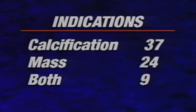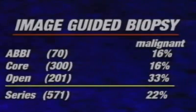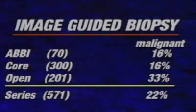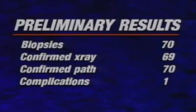For our first 70 patients, the indication for biopsy included calcification in 37 cases, a mass in 24 cases, and both calcification and mass in 9. The pathology was benign in 59 patients and malignant in 11, for a positive predictive value of 16% in our early series. During a one-year experience with image-guided biopsy, the positive predictive value was 16% for ABBI biopsies, 16% for core biopsies, and 33% for open procedures. The overall yield was 22%. In our first 70 cases, the specimen x-ray clearly confirmed the presence of the lesion in 69 and was suggestive in the other case. The pathology report was consistent with the x-ray finding in all 70 cases.